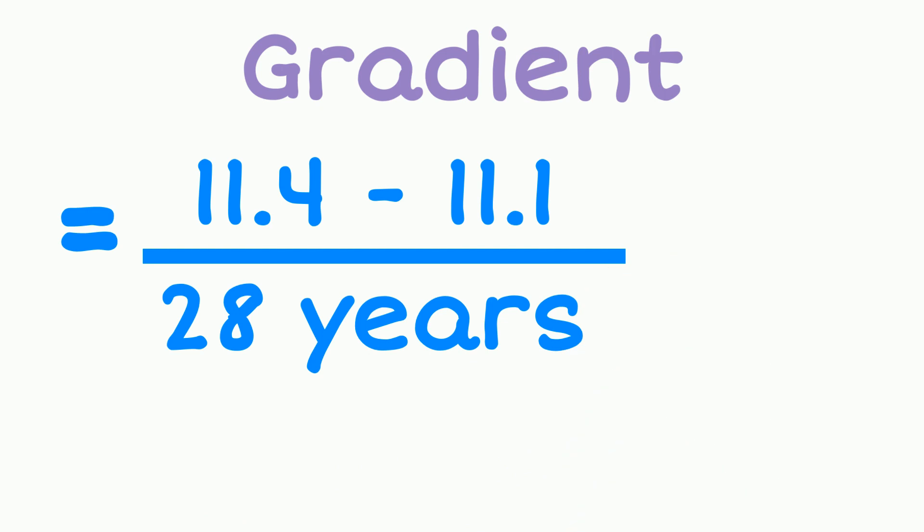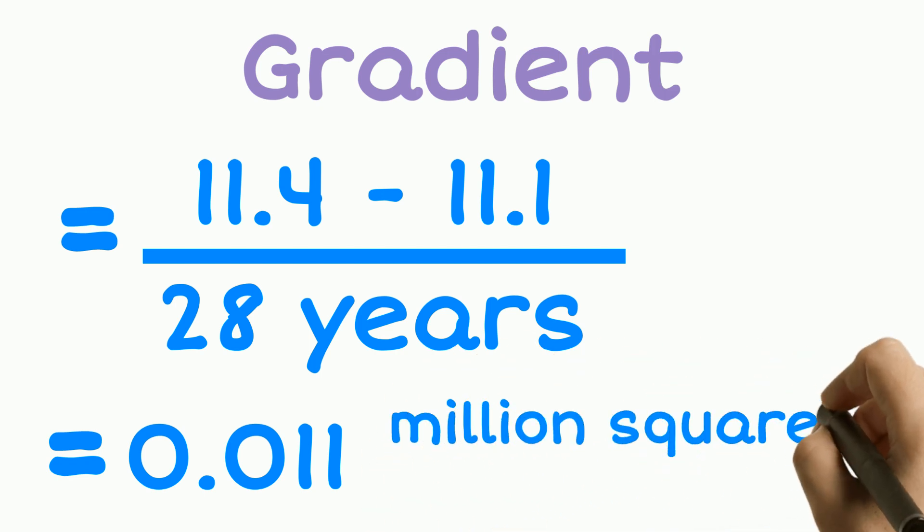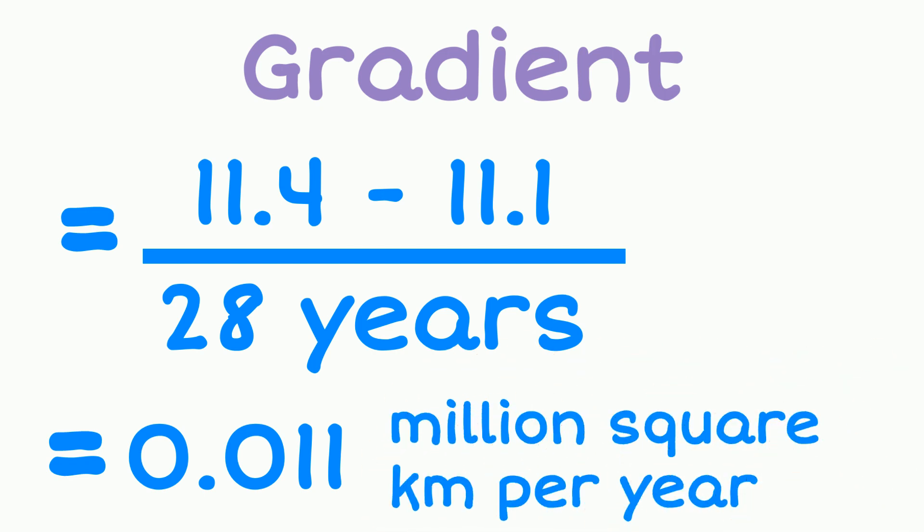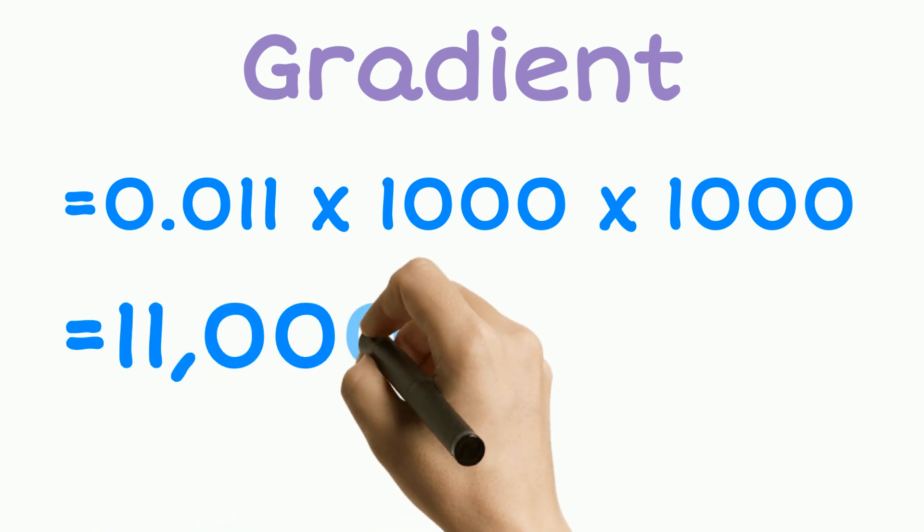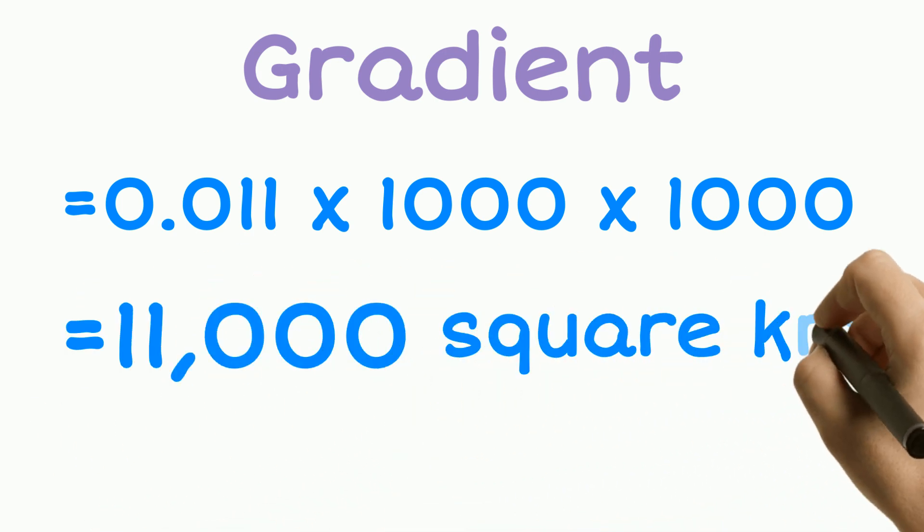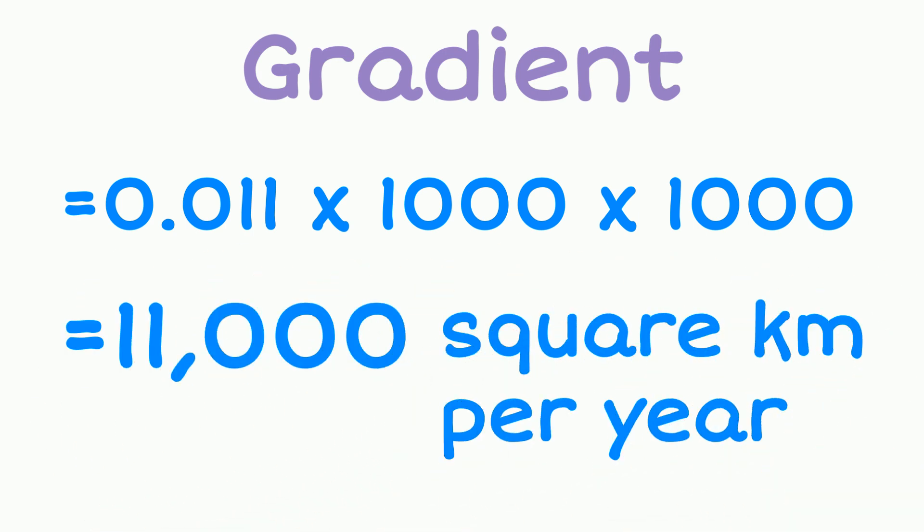Now this will give us an average change of 0.011 million square kilometres per year. Now that's a number that's hard to get our head around, so I'm going to convert that from millions of square kilometres into thousands of square kilometres. So I'm going to multiply by a thousand and a thousand and when I do that that will give me an average of 11,000 square kilometres per year.